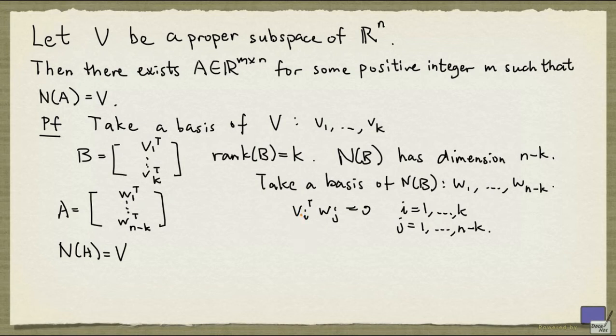So why is that? Well, let's look at these equations here. We can rewrite them as Wj transpose times Vi equals 0. And what this means is A times Vi is going to be the tuple of 0.